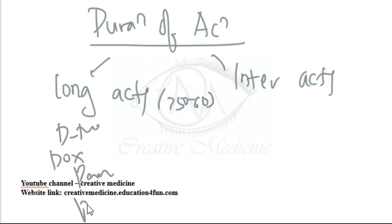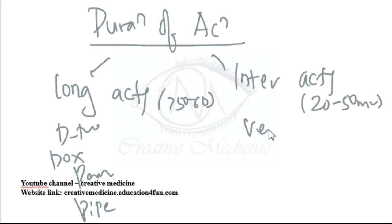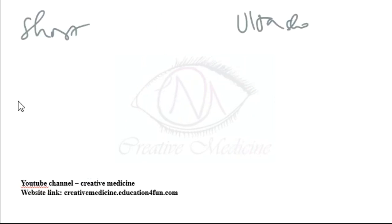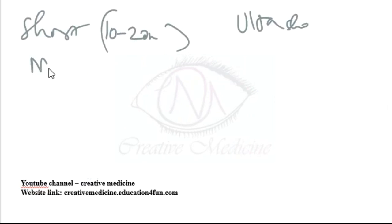Intermediate acting agents act for 20 to 50 minutes. They are rocuronium, vecuronium, atracurium, and cis-atracurium. Short acting agents act for 10 to 20 minutes. They are mivacurium and rapacurium.